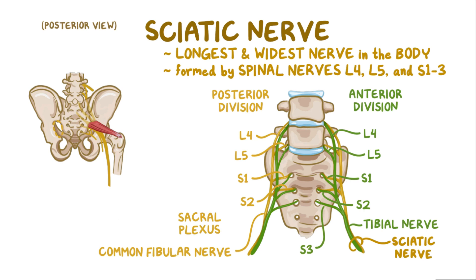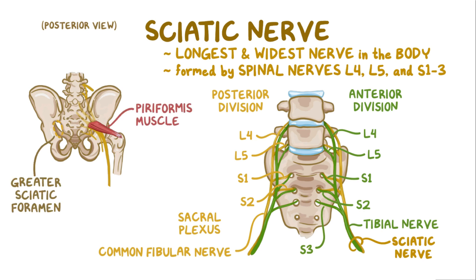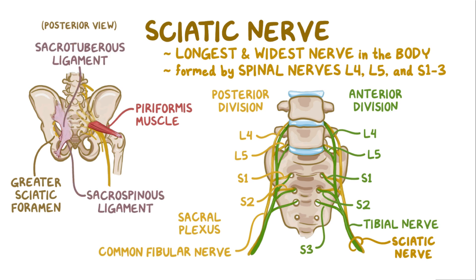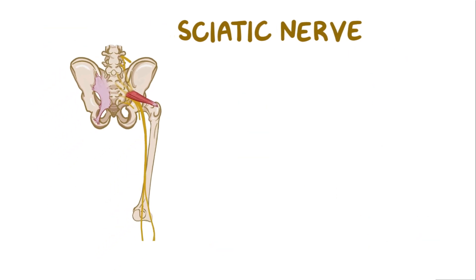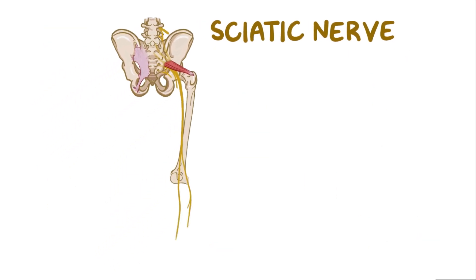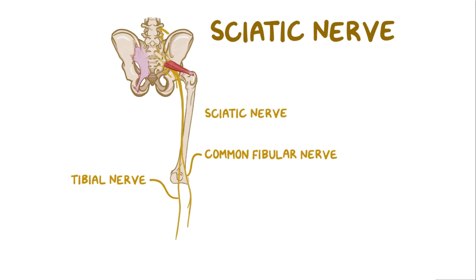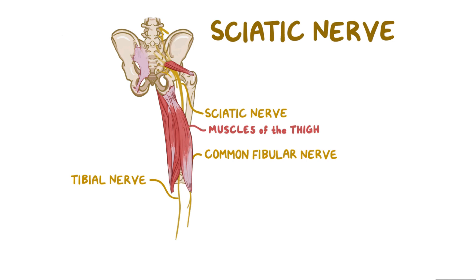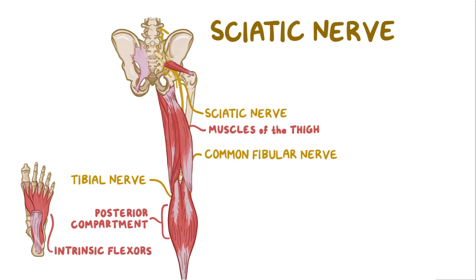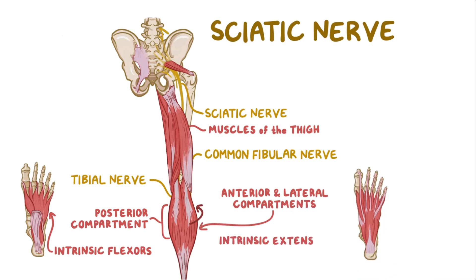The sciatic nerve then passes beneath the piriformis muscle and through the greater sciatic foramen, which is an opening formed by the pelvic bone, sacrospinous, and sacrotuberous ligaments. It then travels down the back of the thigh to the back of the knee, where it splits into the tibial and common fibular nerves. The sciatic nerve innervates the muscles in the back of the thigh. The tibial nerve innervates the muscles of the posterior compartment of the leg and intrinsic flexors of the foot. The common fibular nerve is in charge of the muscles in the anterior and lateral compartments of the leg and intrinsic extensors of the foot.